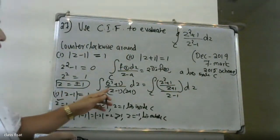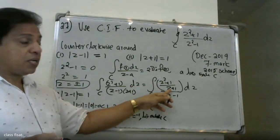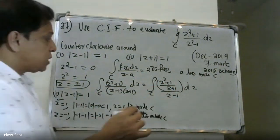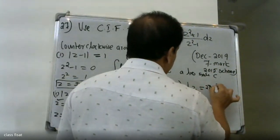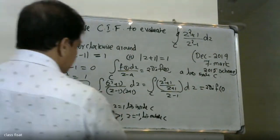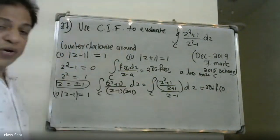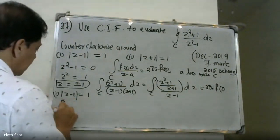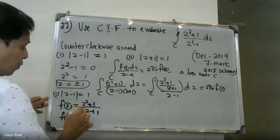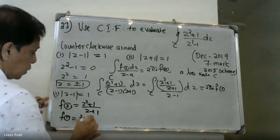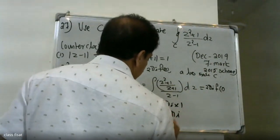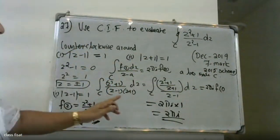We apply Cauchy's formula with z = 1 lying inside: the integral equals 2πi · f(1). Computing f(1): f(z) = (z² + 1) / (z + 1), so f(1) = (1 + 1) / (1 + 1) = 2/2 = 1. Therefore the answer is 2πi · 1 = 2πi.